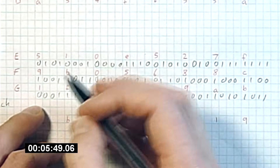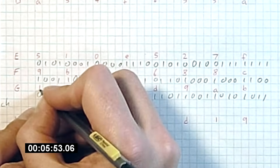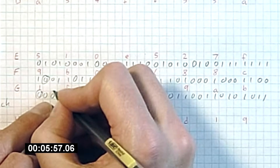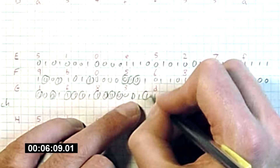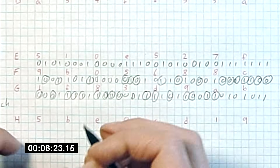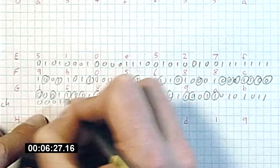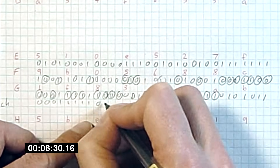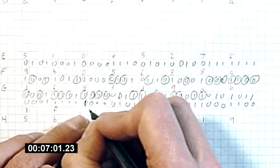For the choice function: for each bit of E, if it's zero we circle the corresponding bit of G; if it's one we circle the corresponding bit of F. We write down the circled bits as our choice result: 0, 0, 0, 1, 1, 1, 1, 1, 0, followed by the remaining bits.